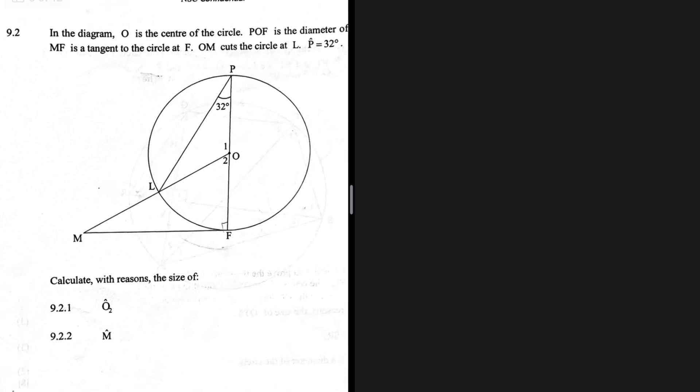As soon as you look at O2, you realize that O2 is an angle at the center. And then we know that there's a theorem that says an angle at the center is twice that at the circumference, provided that they're subtended by the same arc. So take a look at LF. LF subtends O2. LF also subtends P of angle of size 32 degrees.